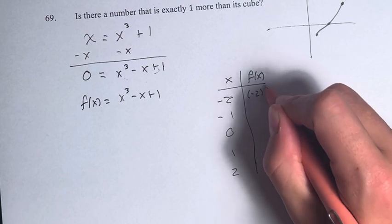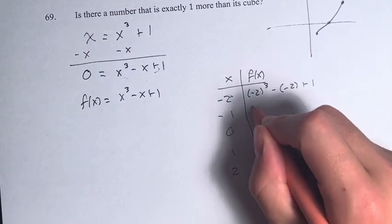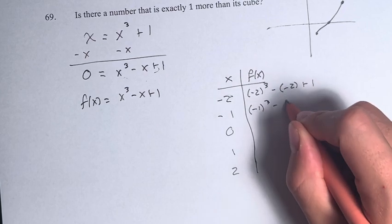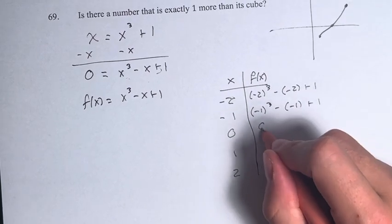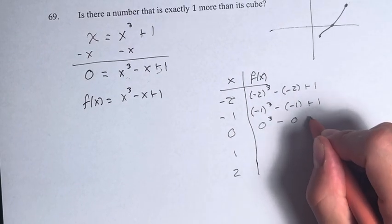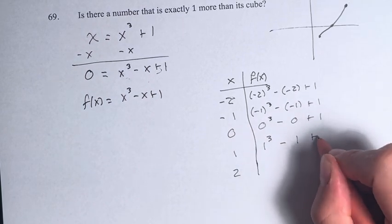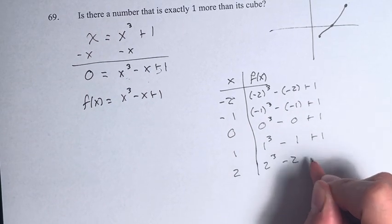So this becomes negative two cubed minus negative two plus one. Negative one cubed minus negative one plus one. Zero cubed minus zero plus one. One cubed minus one plus one. And two cubed minus two plus one.